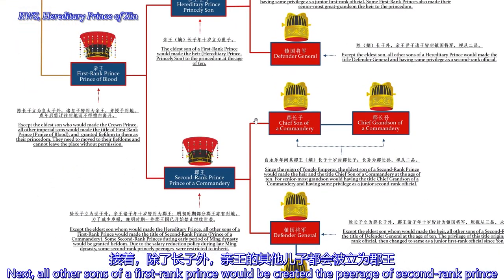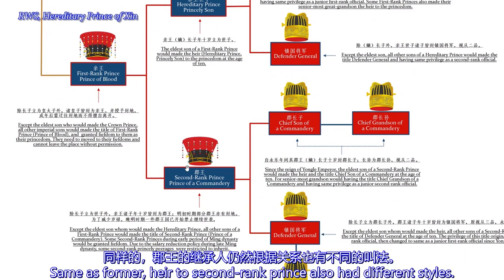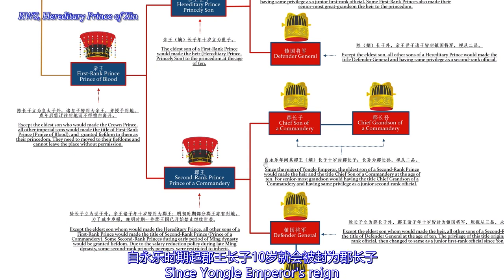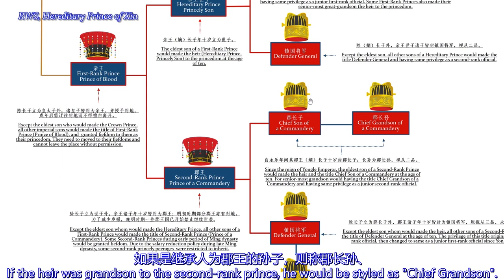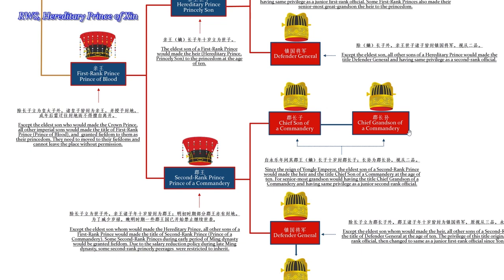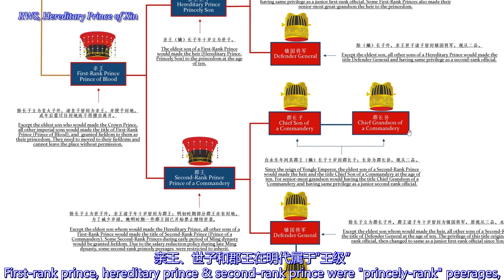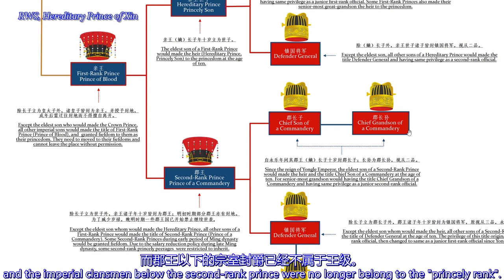All other sons of a first-ranked prince would be created second-ranked princes. Same as before, the heir to a second-ranked prince also had different styles. Since the Yongle Emperor's reign, the second-ranked prince's eldest son would be created the title of Chief Son. If the heir was the grandson of the second-ranked prince, he would be styled Chief Grandson. It should be noted that first-ranked prince, Hereditary Prince, and second-ranked prince were all princely rank titles, and imperial clansmen below the second-ranked prince would no longer belong to the princely rank.